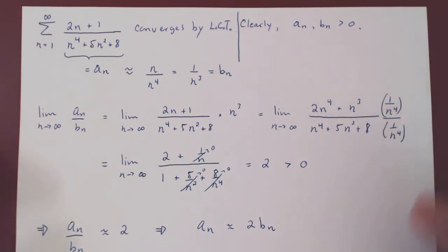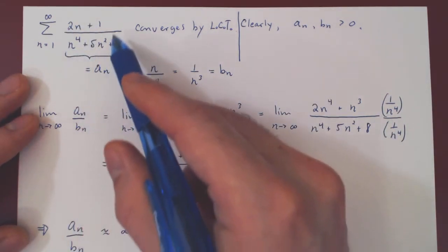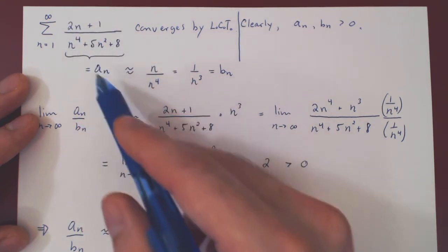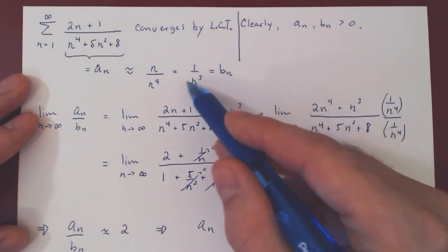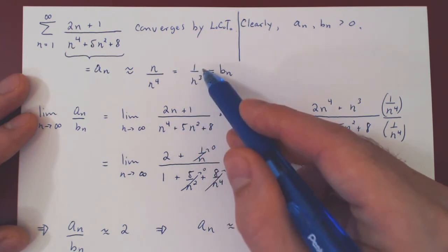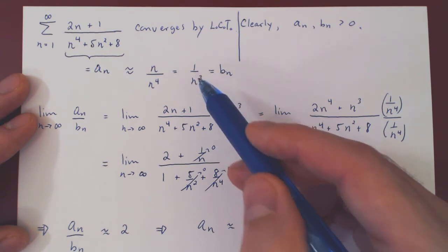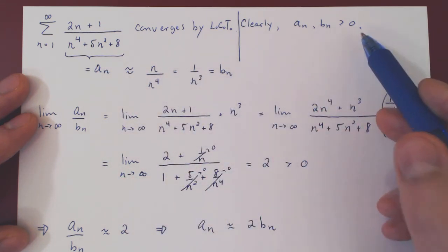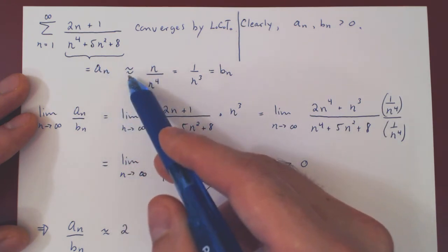And so hopefully you can appreciate how elegant the limit comparison test is. You look at the terms you're summing over. Ask yourself, what are the terms roughly when N is large? If you have either a P series or a geometric series, you should be happy. All you have to show, ultimately, is that both terms are positive. And then your intuition is correct.